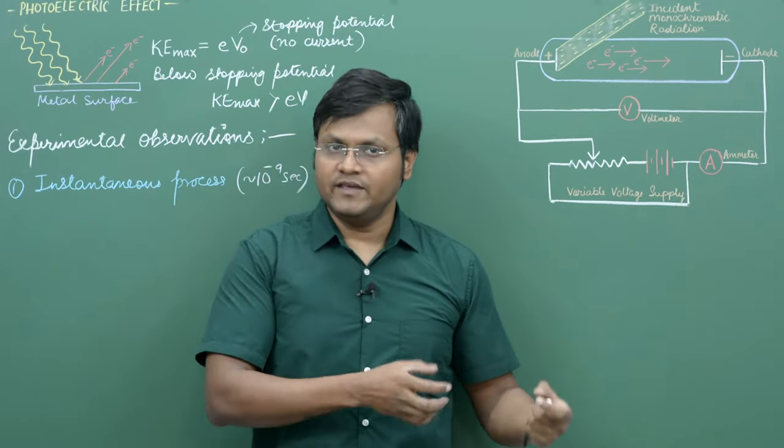Every single photon has an energy of hν. So the incident radiation consists of all these photons which come and reach the metal surface, and the moment they reach the metal surface, they create the photoelectric phenomenon.